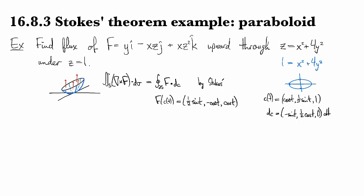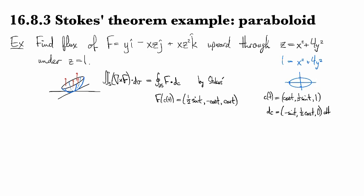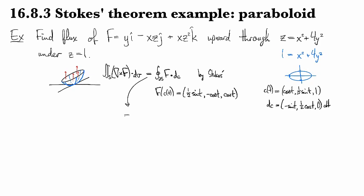So we can go ahead and continue from this integral and say that's going to be the integral now from zero to 2π in our parametrization, and we've got -1/2 sin²t - 1/2 cos²t plus zero, so that's just putting our dot product together, times dt.